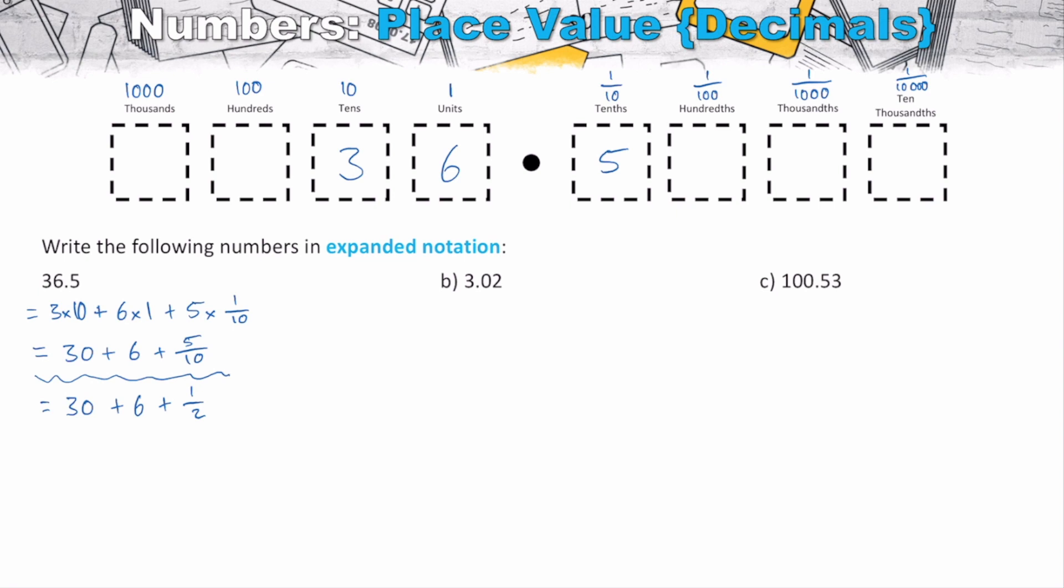So let's have a look at the next question here. So we've got 3.02. So what that tells us is we've got three wholes, we've got none of our tenths column, but we do have two of our hundredths column. So when we break this up, we've got three of our units, we've got zero of our tenths, and we've got two of our one hundredths.